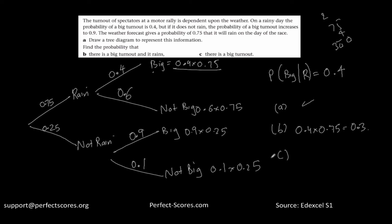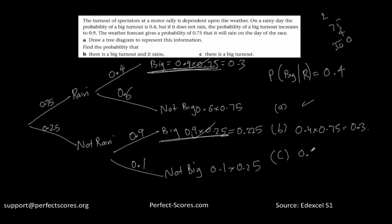Part C asks: what is the probability that there is a big turnout overall? The chance of a big turnout if it rains is 0.30, and the chance of a big turnout if it does not rain is 0.9 times 0.25, which equals 0.225. So the total probability of a big turnout is 0.30 plus 0.225, which equals 0.525.